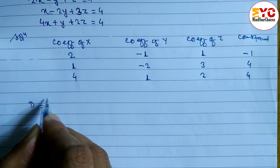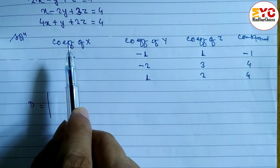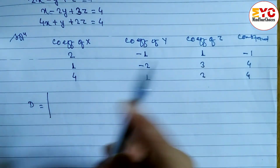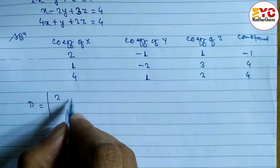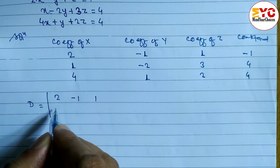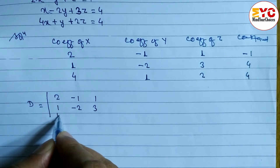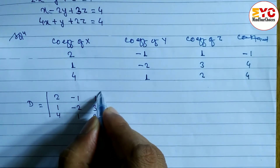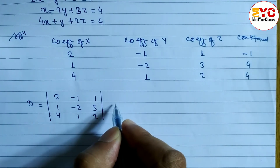Hope you understand up to here. Now we have to find out D, D1, and D2. To find out D, we take the coefficients of X, Y, and Z. So the matrix is: 2, minus 1, 1 / 1, minus 2, 3 / 4, 1, 2.